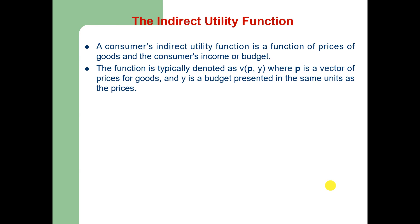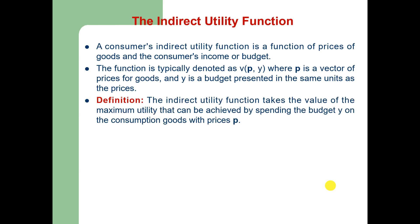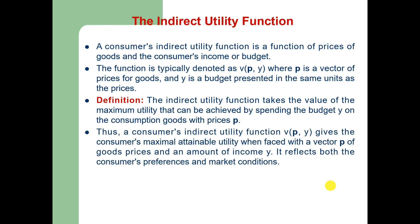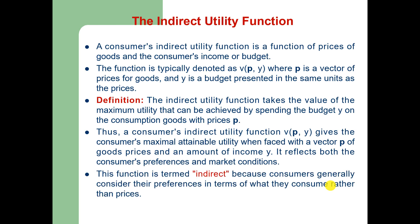A consumer's indirect utility function is a function of prices of goods and the consumer's income or budget. It is typically denoted V of P and Y, where P is the vector of prices for goods and Y is the budget presented in the same units as the prices. This function takes the value of the maximum utility that can be achieved by spending budget Y on consumption goods with prices vector P. Thus, the indirect utility function gives the consumer's maximum attainable utility when faced with the vector P of goods prices and income Y.